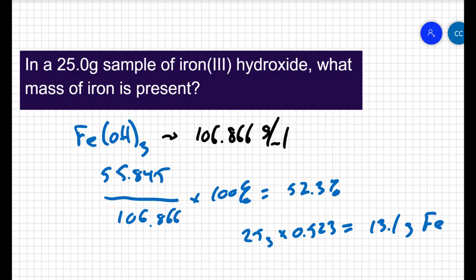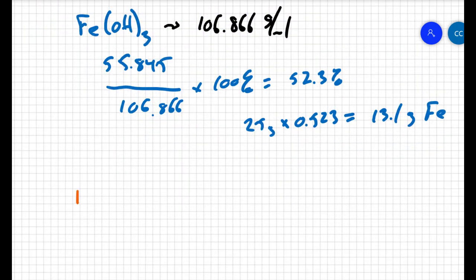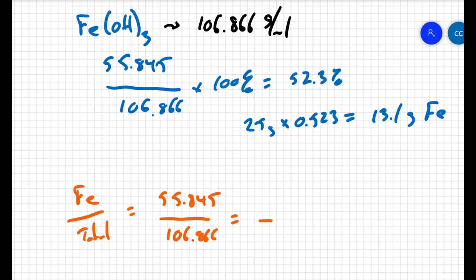We can also treat this in terms of similar ratios. I have this ratio of the iron over the total, which we said was 55.845 over 106.866. And I know that the total of my sample is 25 grams. So, I could find the mass of the iron because the ratio of the iron to the total must be equal to the ratio of the iron to the total in the mass. And when you do that, you get x equals 13.1 grams of iron.